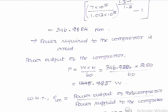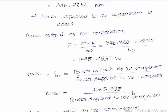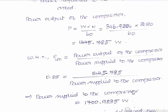Using the mechanical efficiency formula: mechanical efficiency = power output / power supplied to the compressor. The power output from the previous step is 1445.785 W, and mechanical efficiency is 85%. Substituting, the power supplied to the compressor is 1700.9235 W.